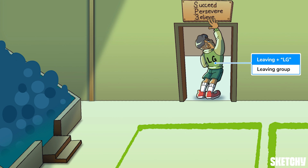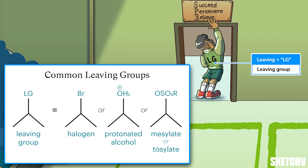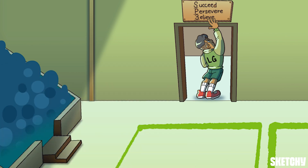This tired athlete is leaving the gym in his LG sweater to remind you of leaving groups, because if you're going to do a substitution reaction or an elimination reaction, you're going to need a molecule with a leaving group. A leaving group is one of the most intuitively named concepts in chemistry — it's a functional group that leaves a molecule in a reaction. Leaving groups don't mind picking up an extra pair of electrons, so they're usually something pretty electronegative like a halogen, or something with a positive charge already like a protonated alcohol group. A leaving group picks up that extra lone pair of electrons by stealing the electrons in the bond connecting it to the rest of the molecule, breaking that bond and leaving.